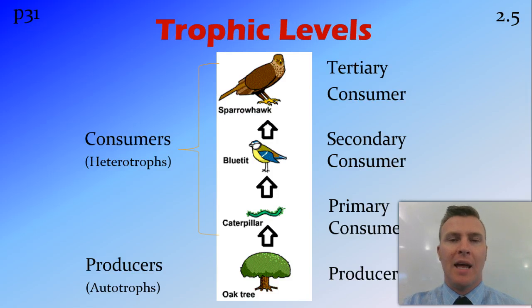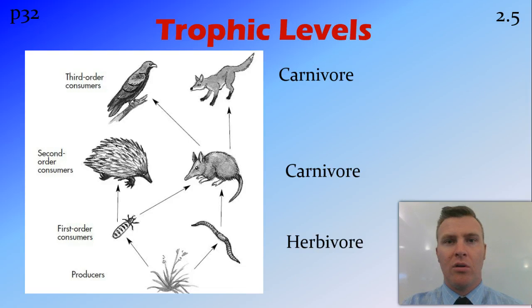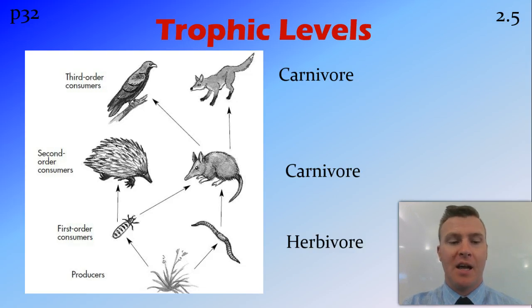Due to energy loss between the trophic levels, which we'll get into shortly, most food chains don't go any further than that. Food webs are a little more complicated — it's basically bringing multiple food chains together. It shows when one thing is eaten by a number of things, or eats a number of different things, and it's more representative of what the actual ecosystem is like.